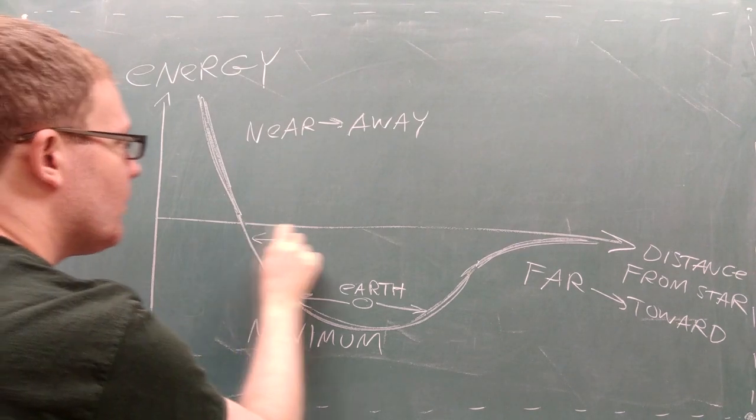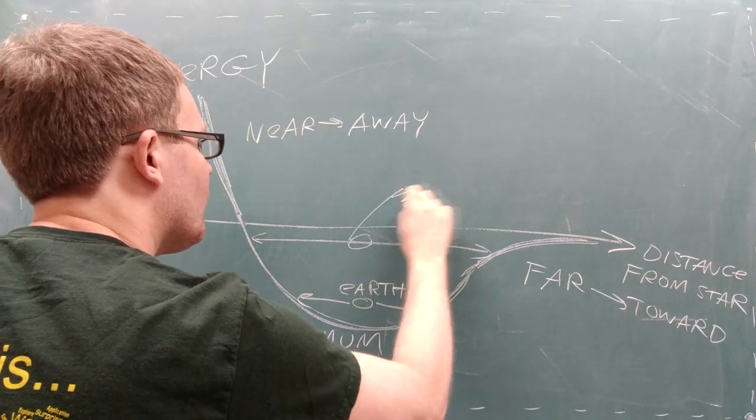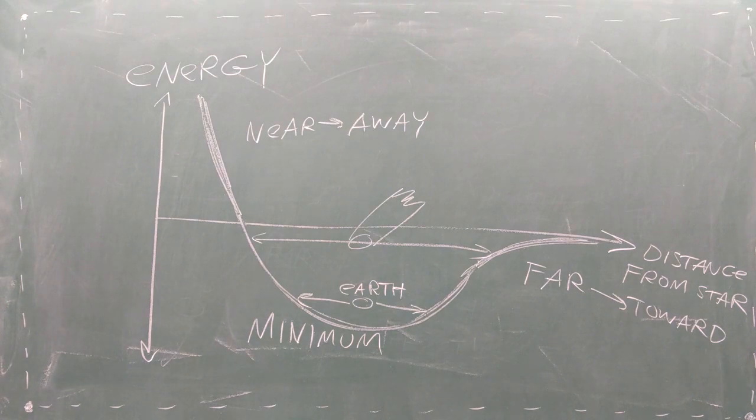But when an object's energy is closer to zero, its distance can vary wildly, leading to the type of orbit that a comet has.